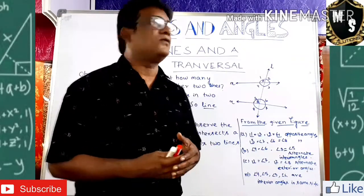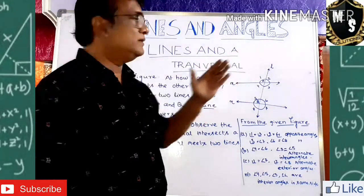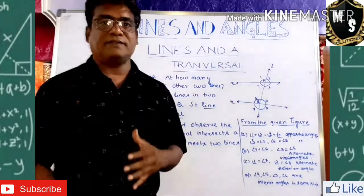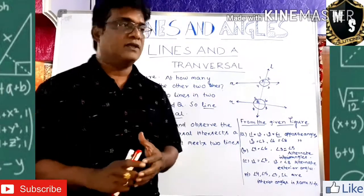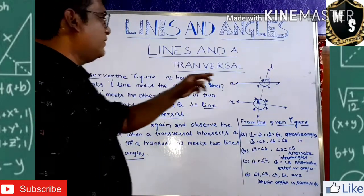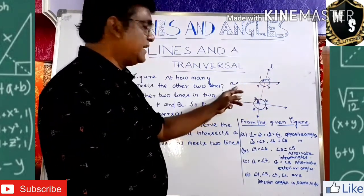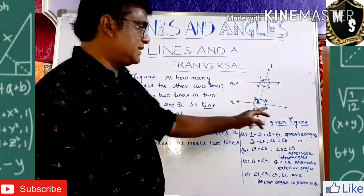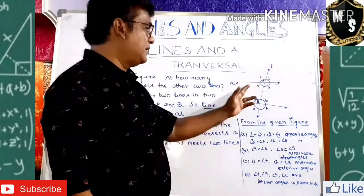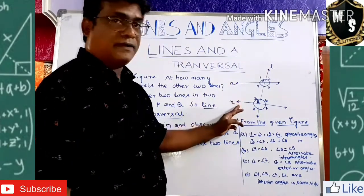The topic is Lines and Angles — specifically, lines and a transversal. I have drawn a figure for you. The figure has one line called M and another line called N, so there are two lines: M line and N line.